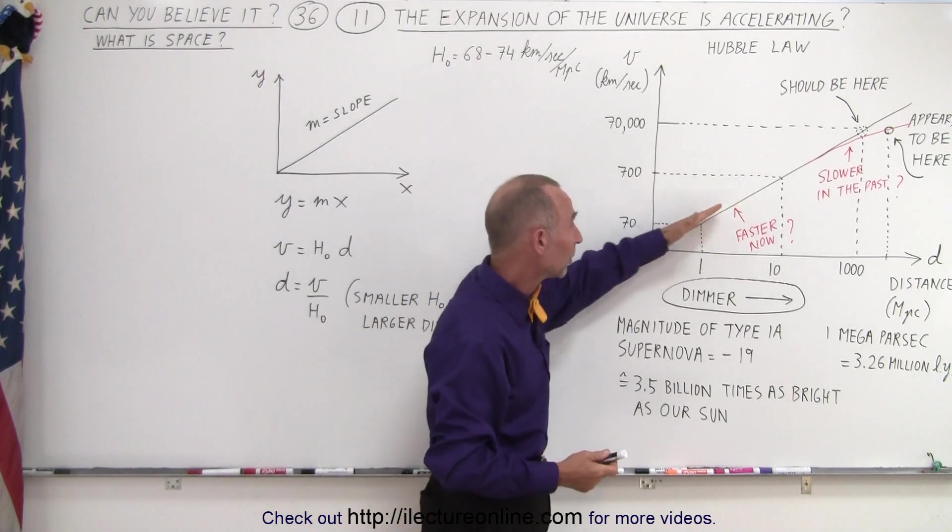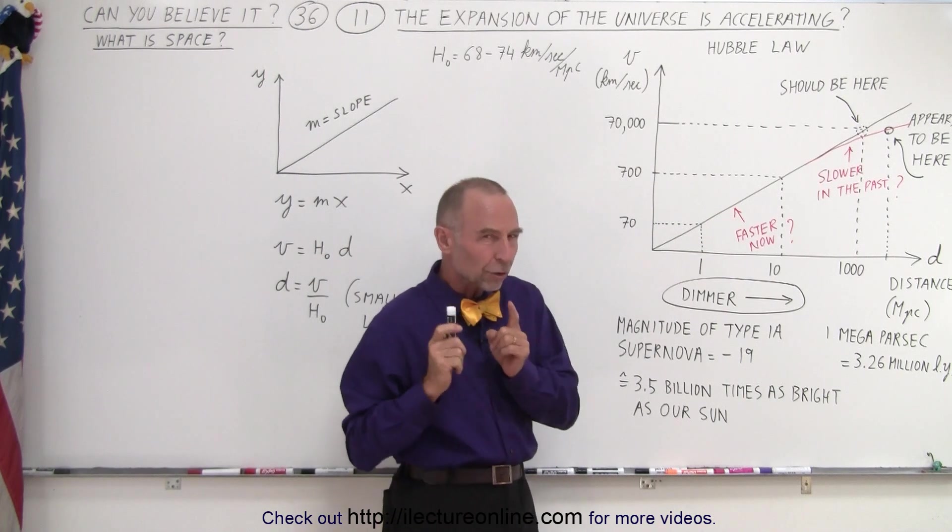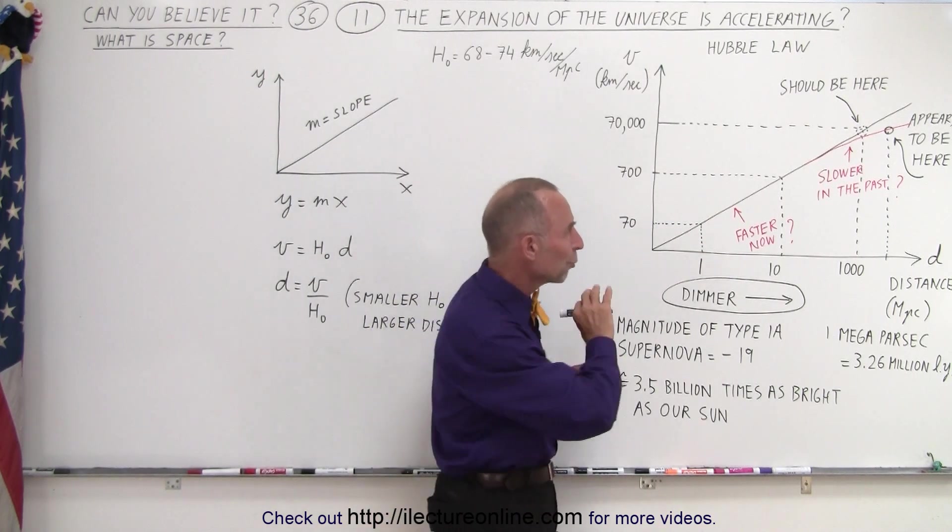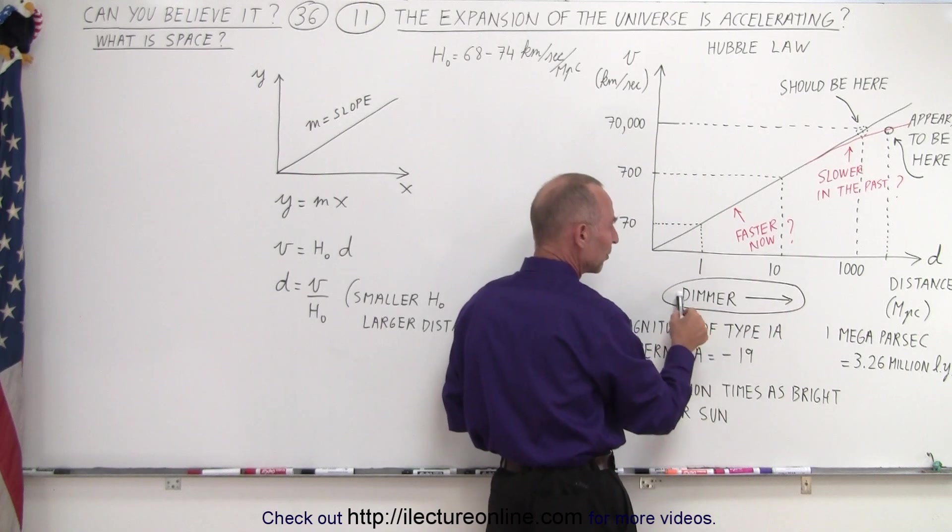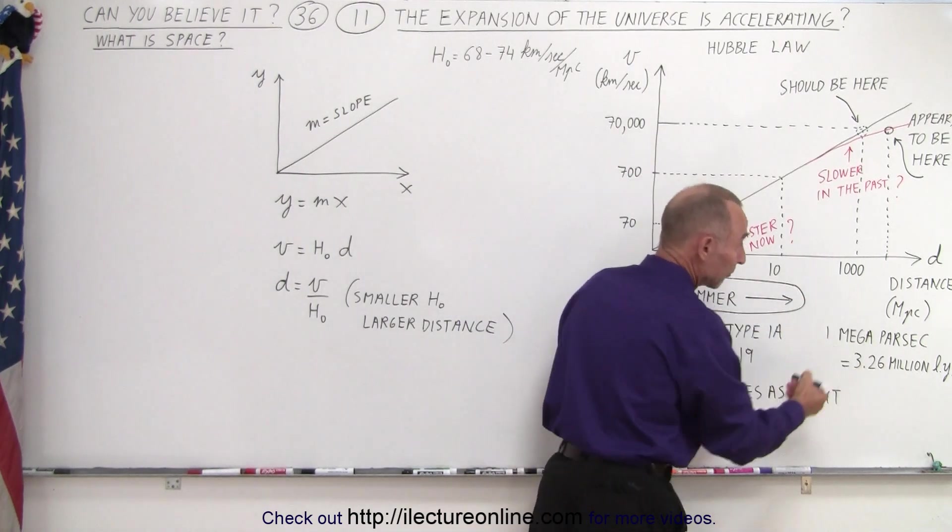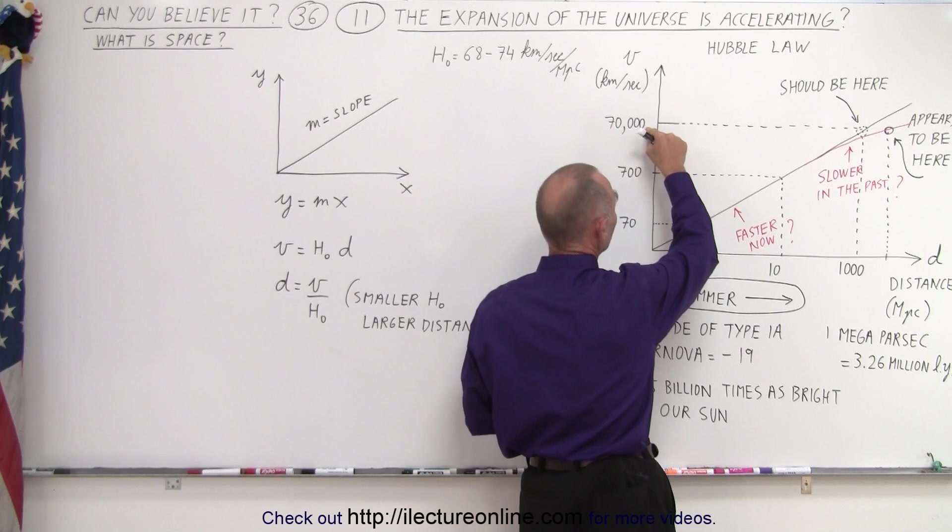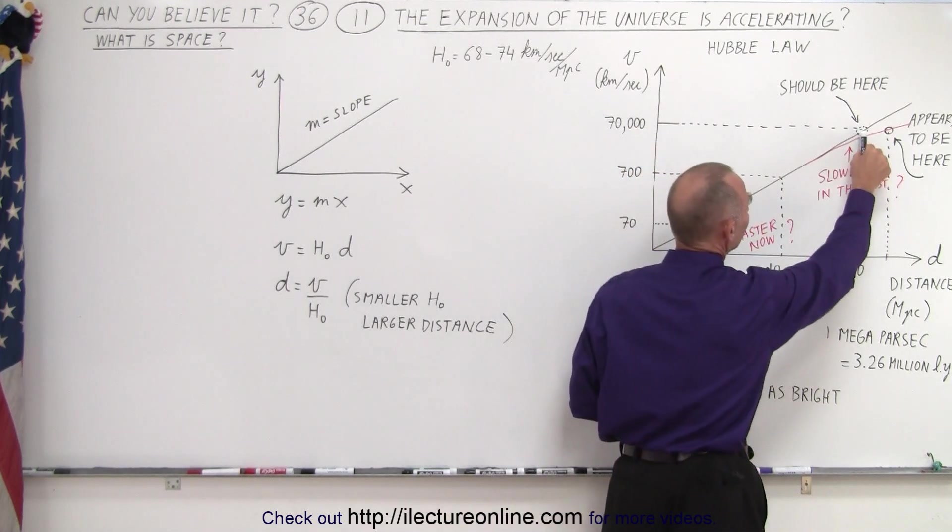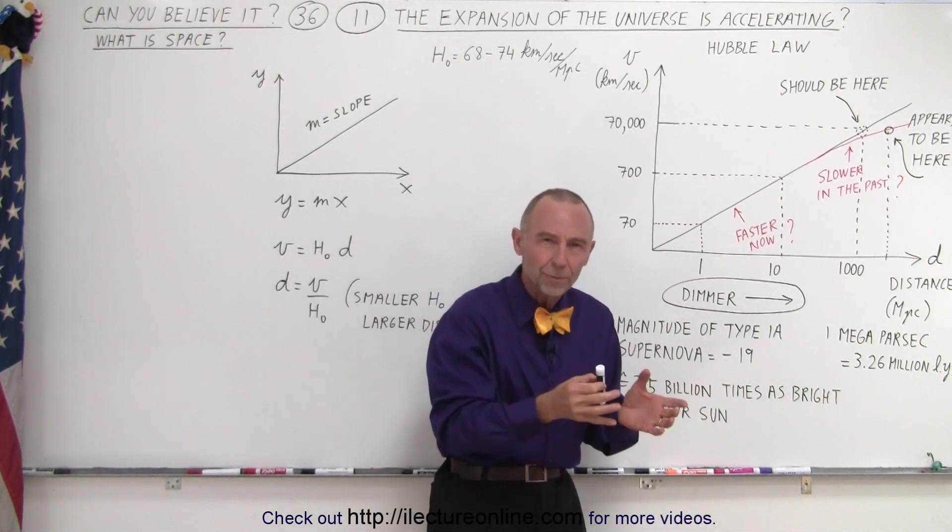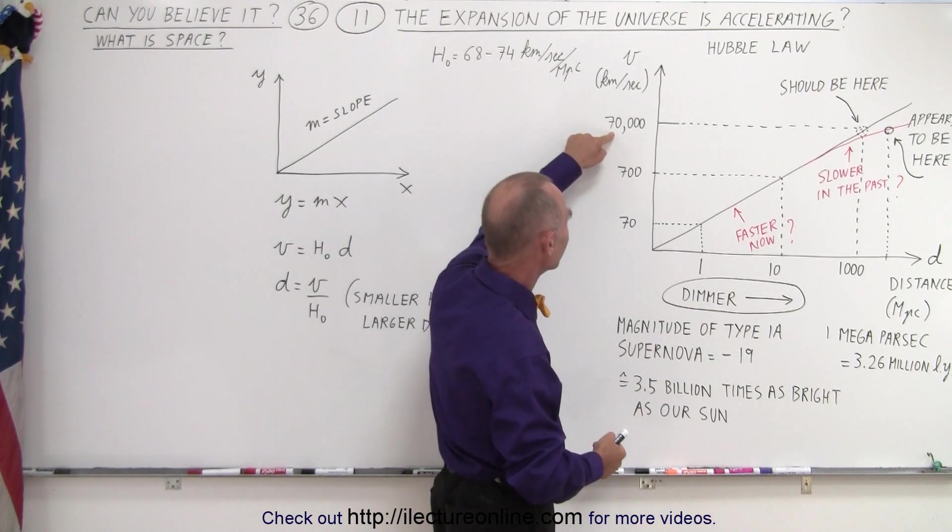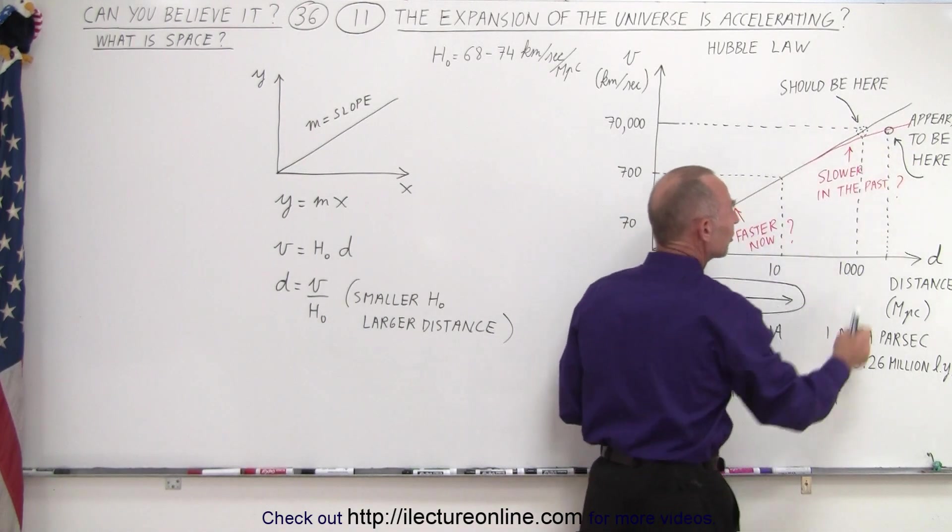We know the approximate Hubble constant is about 70 kilometers per second per megaparsec. But when we look at Type 1a supernovas really far away, something unexpected happens. Based on their recessional velocity—how fast they move away—we expect them at a certain distance with a certain brightness. But when we measure them, they appear dimmer than expected. This means they're farther away than we expect them to be.